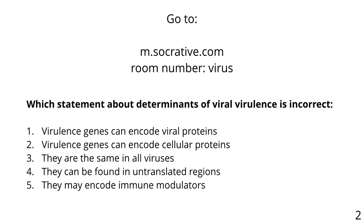Quiz question: which statement about determinants of virulence is incorrect? Options: virulence genes can encode viral proteins; virulence genes can encode cellular proteins; they are the same in all viruses; they can be found in untranslated regions; they may encode immune modulators. The wrong answer is C — they are not the same in all viruses; they are quite different. Virulence genes can be viral or cellular, untranslated, and can encode immune modulators.